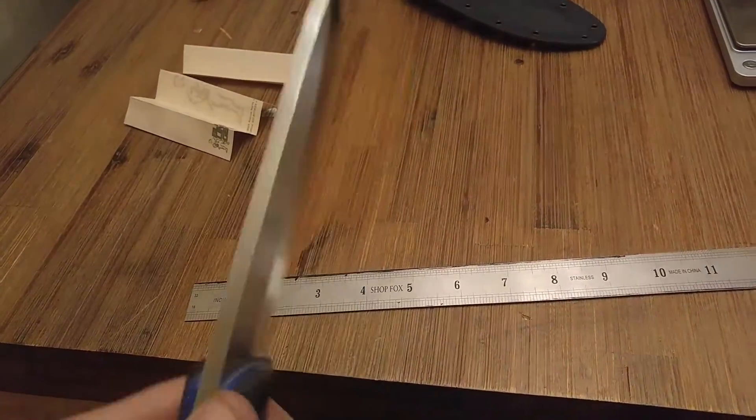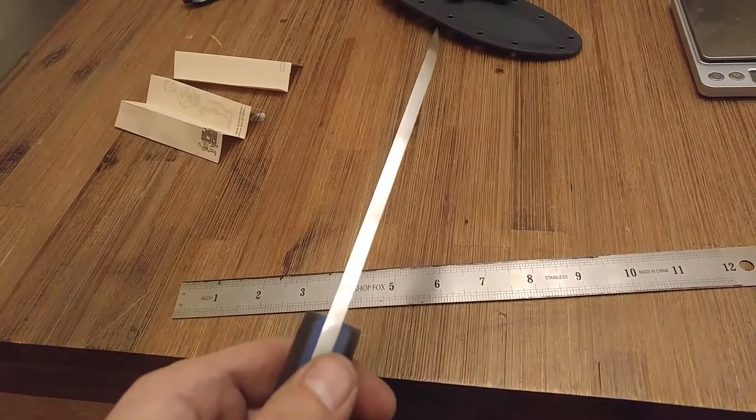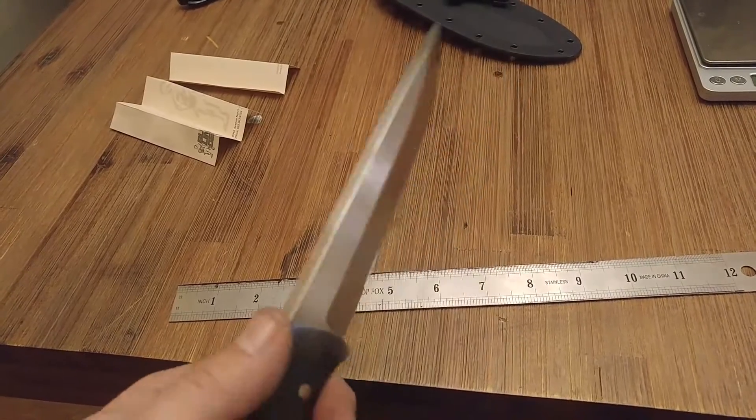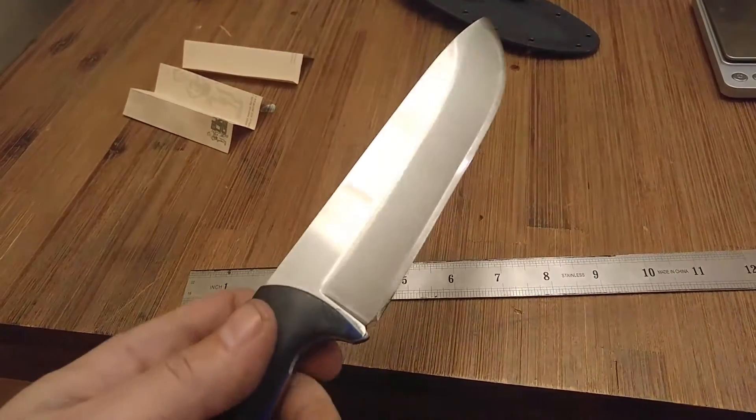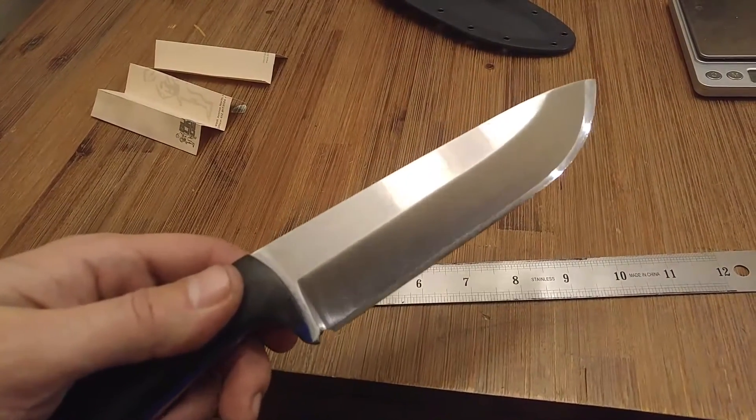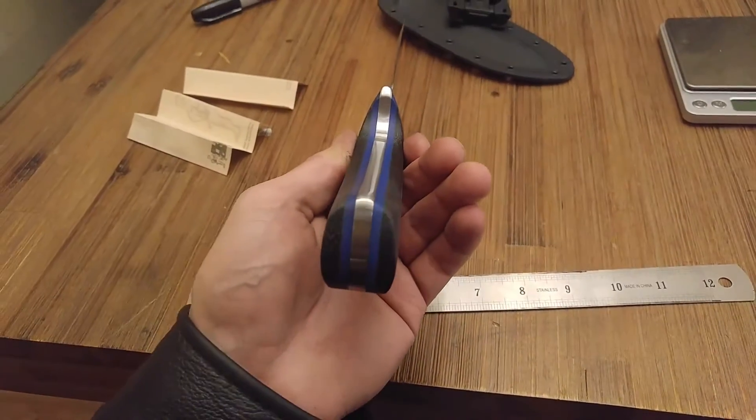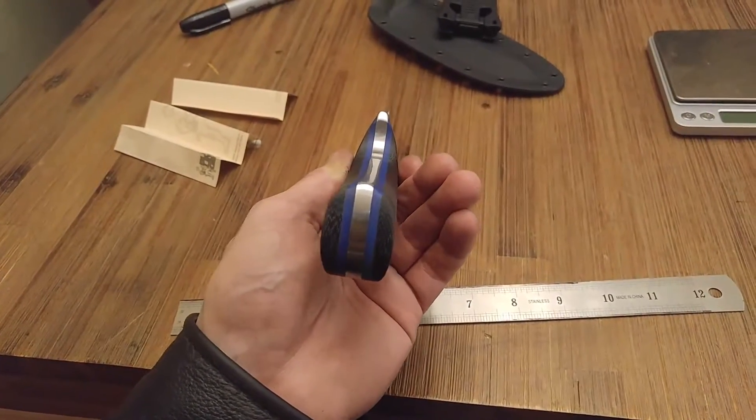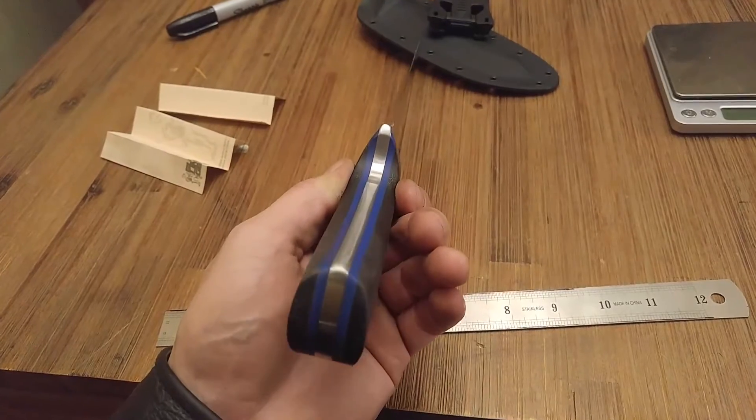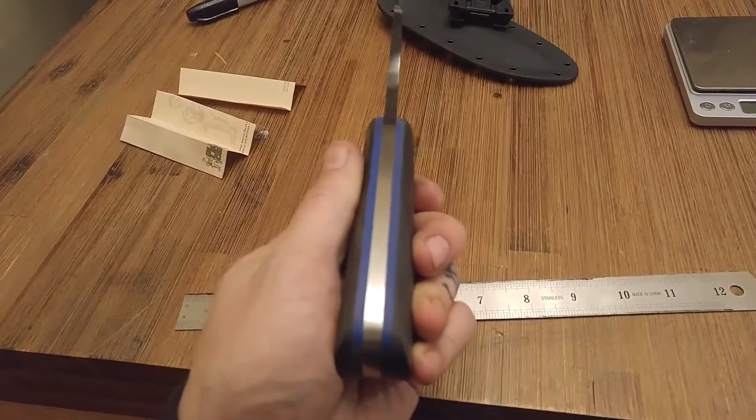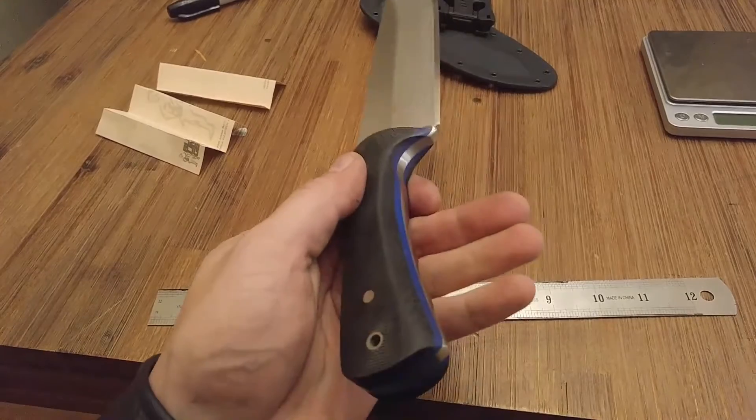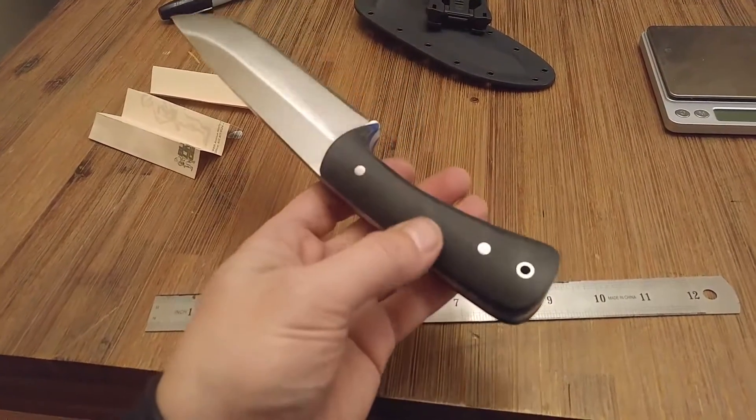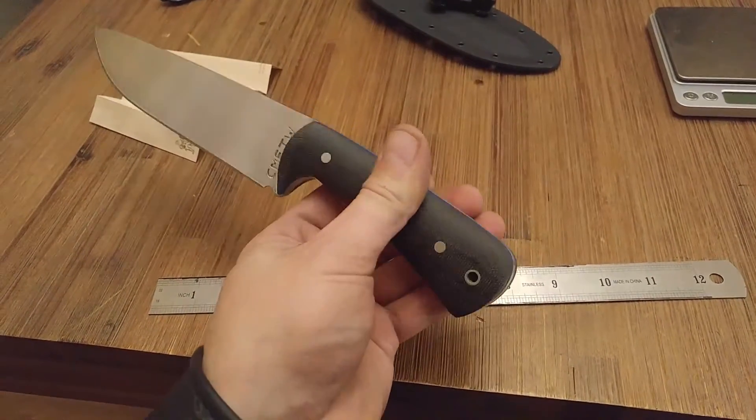This is made from 0.230 thickness Zfinit, which is a nitrogen steel, very stainless and also very pain in the ass to sharpen, which I'll tell you about later. The liners are blue G10, handle scales are black canvas micarta, stainless hardware.